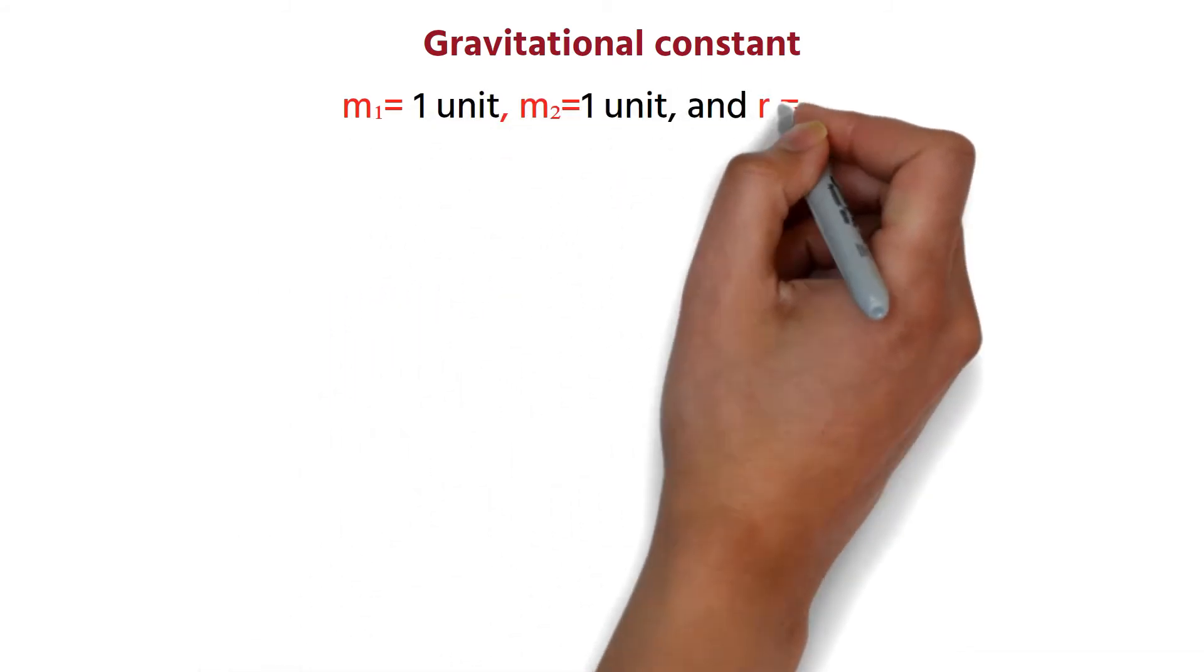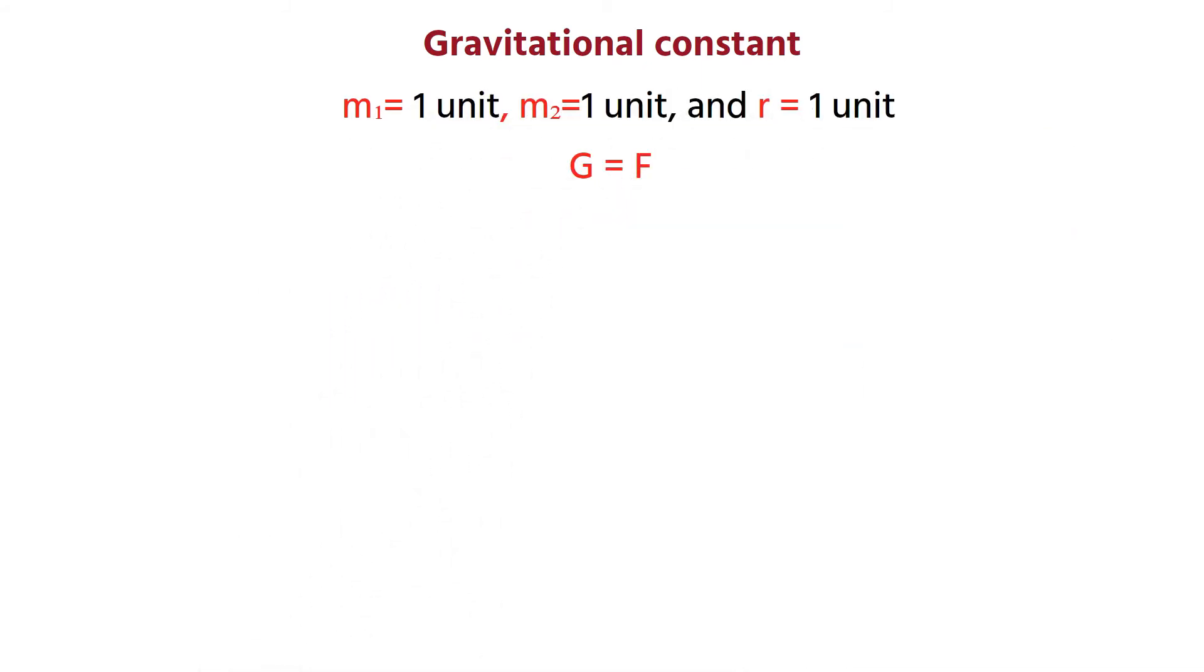If we want to define the gravitational constant G, then all the quantities present in the formula, except the constant G and F, must be taken as unit values. So, if we take unit mass and unit distance, then we get G equals F.